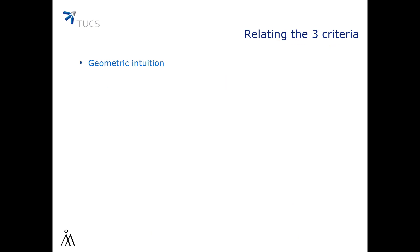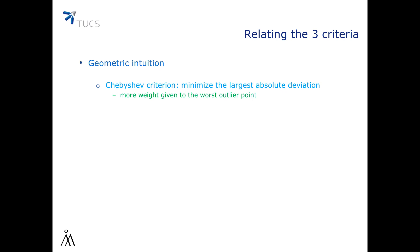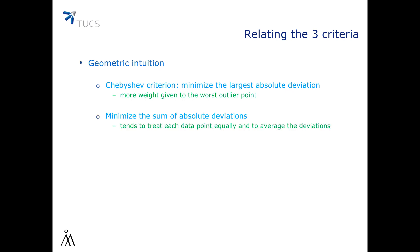We discussed three different criteria for judging the goodness of a fit. First, the Chebyshev criterion focuses on minimizing the largest deviation — a special focus on the worst outlier point. Second, minimizing the sum of all absolute deviations treats each data point equally. Third, least squares is the most practical criterion because standard calculus applies easily; larger deviations contribute more to the fitness score, so the aim is to minimize them more than others.